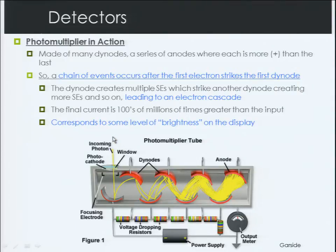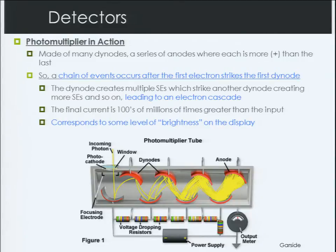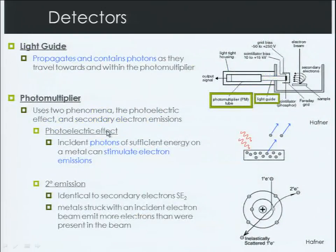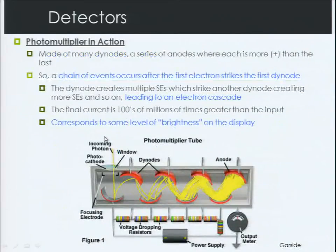To recap: a secondary electron is generated at our sample surface from the interaction of our incoming beam. That electron is attracted by a grid bias towards the out-of-lens secondary electron detector. Then there's another bias to ensure it has adequate velocity. It strikes a scintillator, produces a photon. The photon hits the diodes, produces secondary electrons, those produce more secondary electrons. And by the electron cascade, we have an amplified signal.